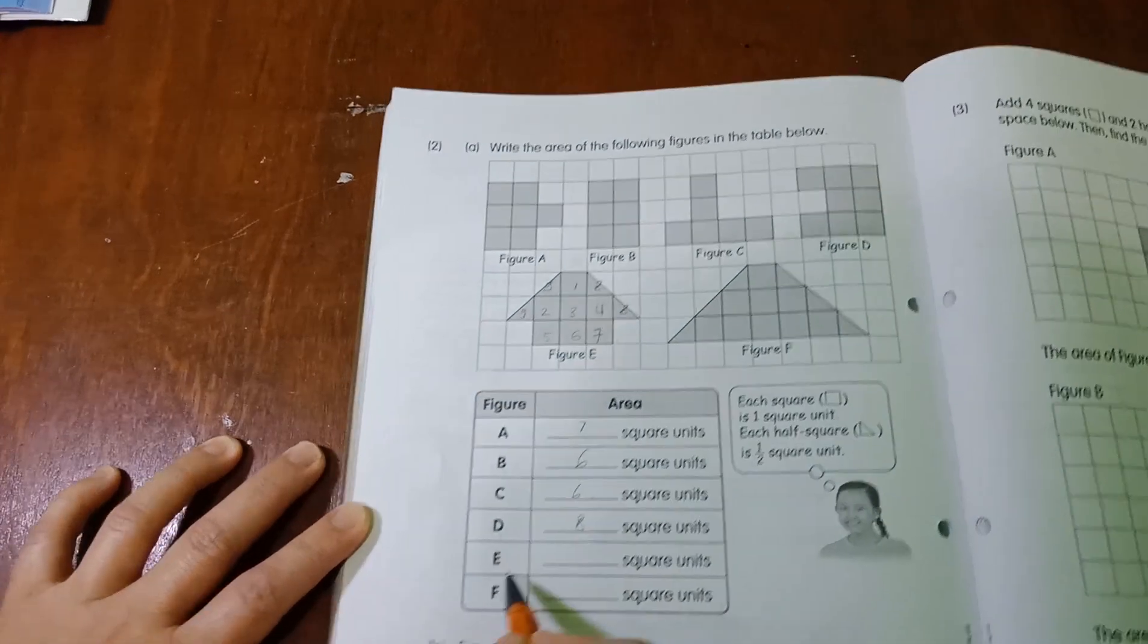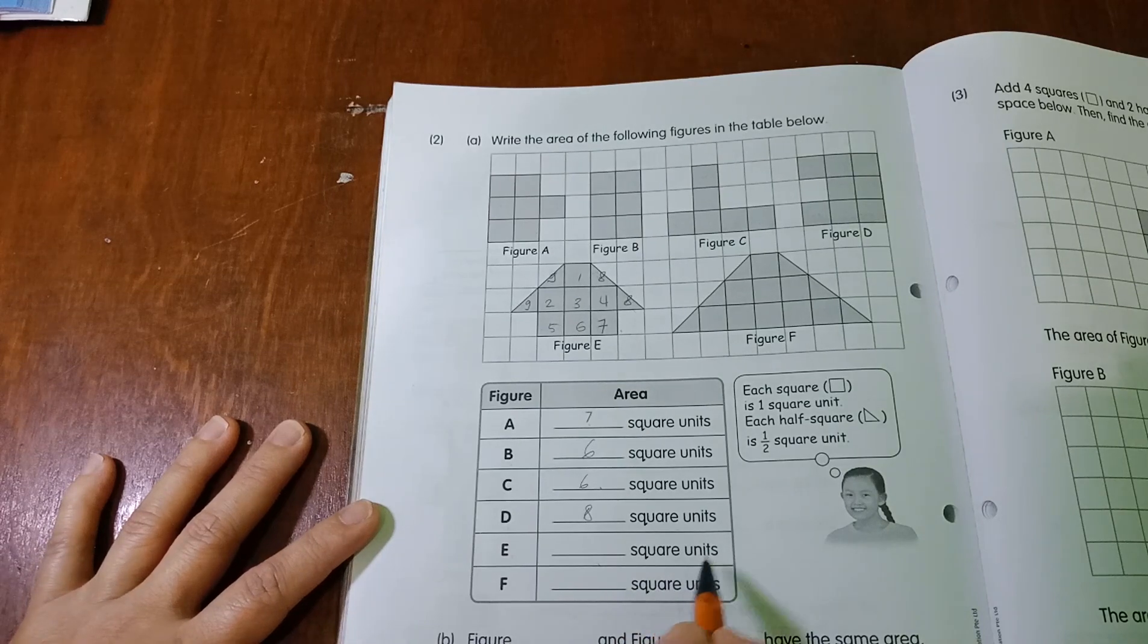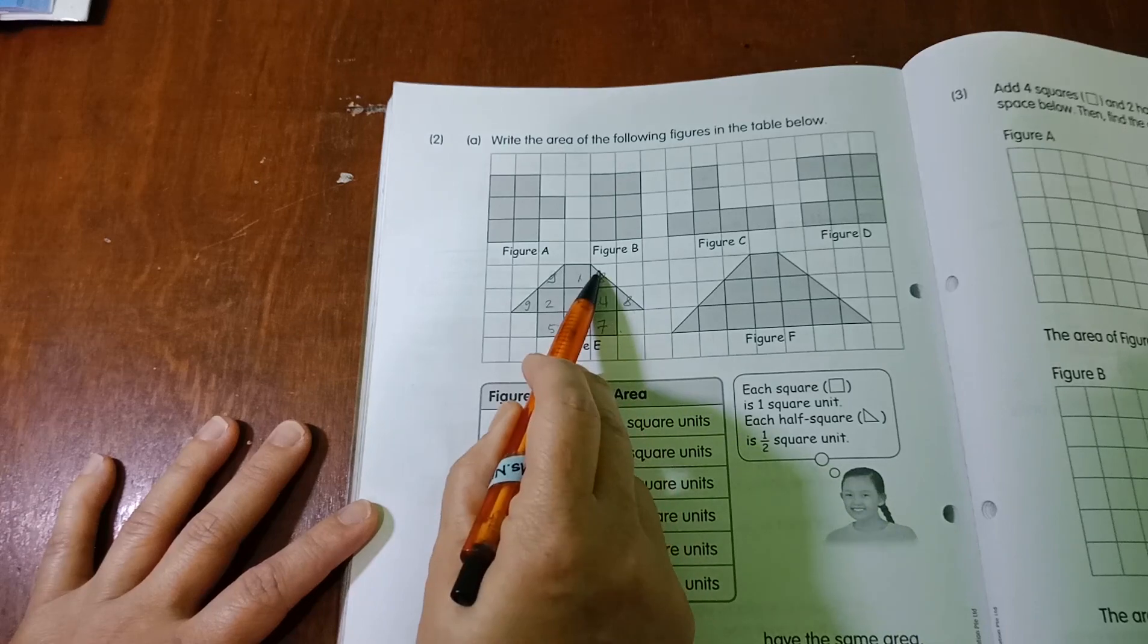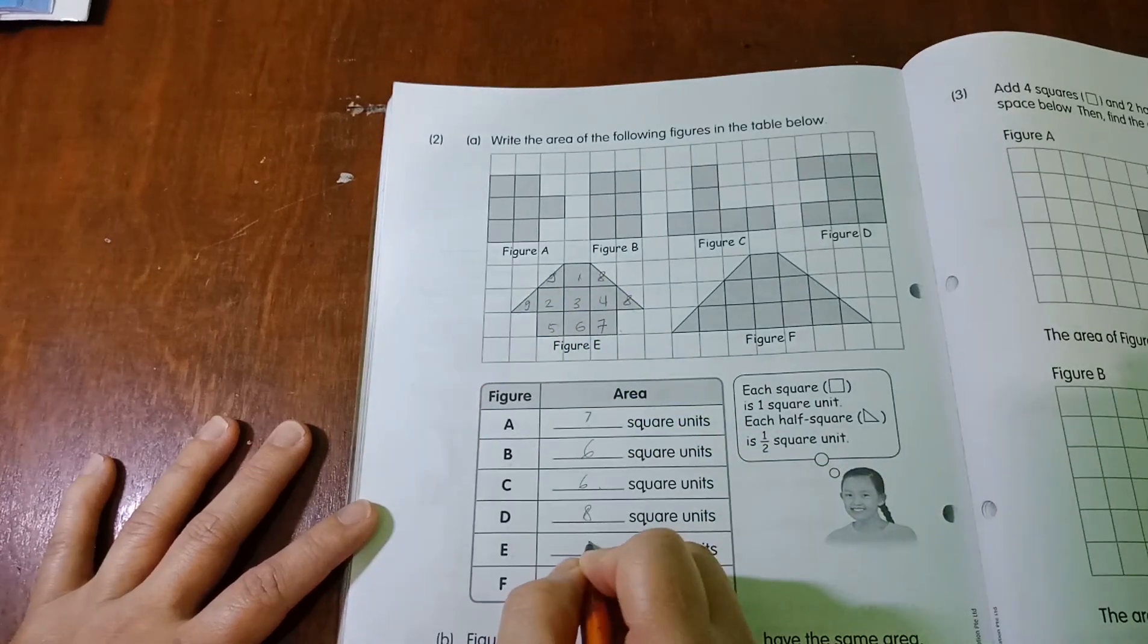So figure E, figure E, how many square units now? 1, 2, 3, 4, 5, 6, 7, 8, 9. So you write 9 over here.